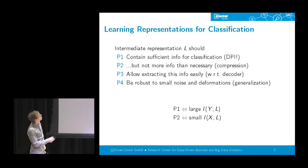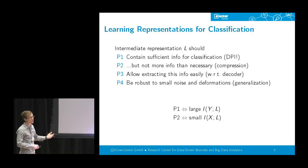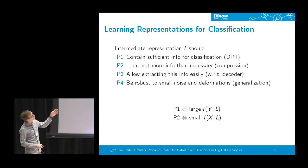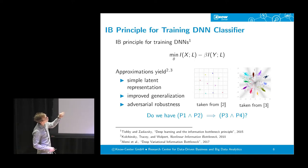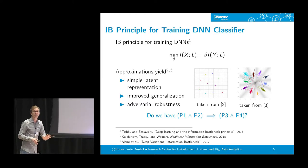From an information-theoretic perspective, the first two properties are amenable to being quantified with information-theoretic quantities. A sufficient representation for classification has large mutual information with the class variable, and a compressed one that removes redundant information has small mutual information with the input features. These two properties together are encoded in the information bottleneck functional. At ITW, Tishby and colleagues argued that the information bottleneck functional can be used not only for analyzing but also for training deep neural networks, creating a hype in the machine learning community.